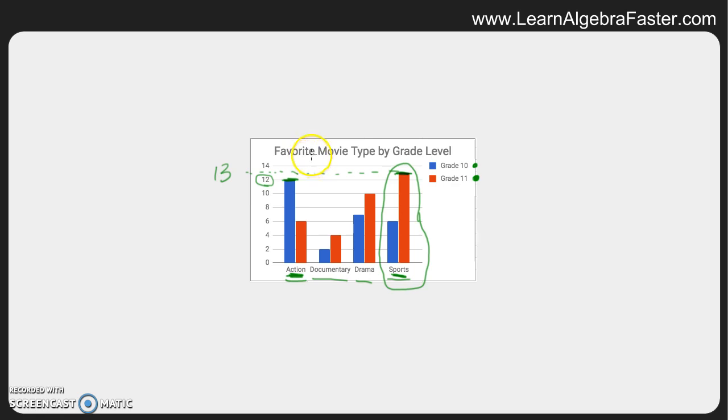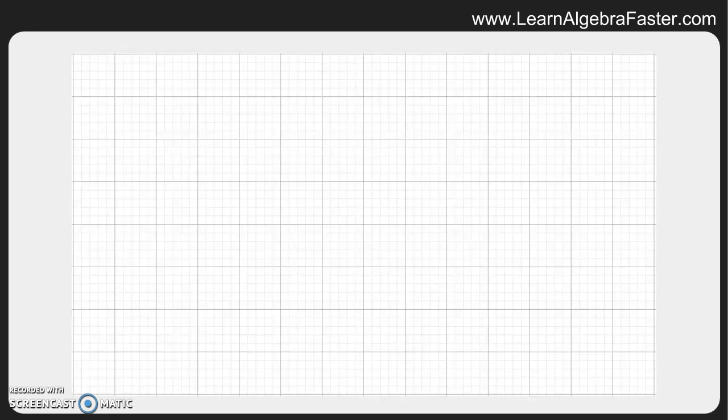You can count the total number of students in each class, you can see easily that documentaries are the least favorite in these two classes, and then you can see the difference in both grades when it comes to favorite movies. This is just an example of how easy to read and easy to understand bar graphs are. So let's do another example.